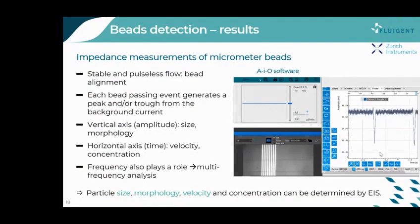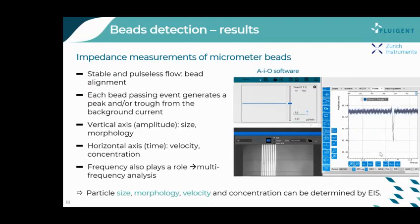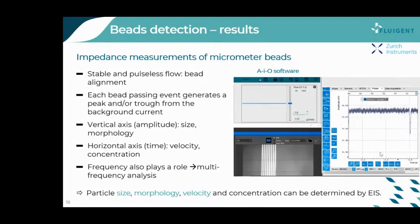So this is how the measurement looks like. On the right side of the slides, you can see the results from the bead detection. On the top left of the video, you can see Fluidgent's software permitting to monitor and control both the flow rate and the pressure. The flow rate set at 1.6 microliters per minute is highly stable, allowing for experiments with very high reproducibility. On the bottom left, you can see the microbead solution passing through the chip's main channel containing the set of electrodes. Each bead passing event will lead to a change from the background current, shown here as either a peak or a trough.